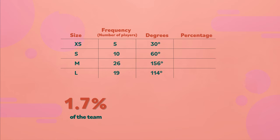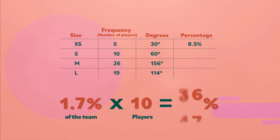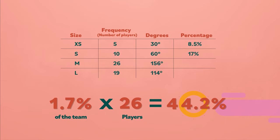So let's multiply one point seven by the number of players wearing each size to determine the percentages. One point seven times five equals eight point five percent. One point seven times ten is seventeen percent. One point seven times twenty-six is forty-four point two percent. And one point seven times nineteen is thirty-two point three percent.